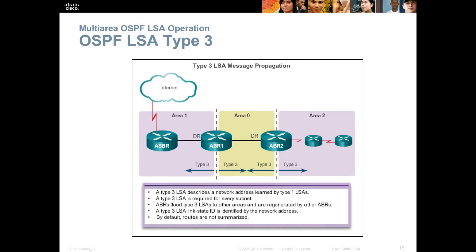Type 3 is going to be one that goes between our areas. Type 3 describes the network addresses learned by Type 1. Type 3 is required for every subnet. Area Border Routers flood Type 3 LSAs to other areas, and they are regenerated by other ABRs. The Type 3 link-state ID is identified by the network address, not by the originating router ID. By default, routes are not summarized.